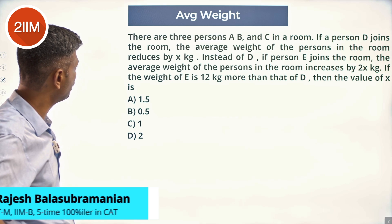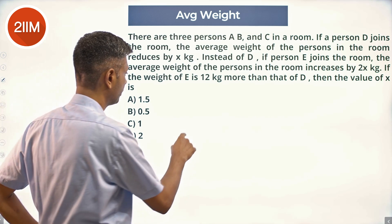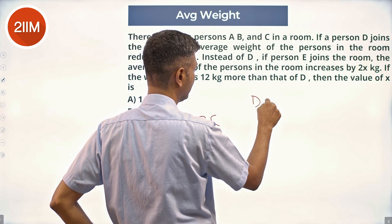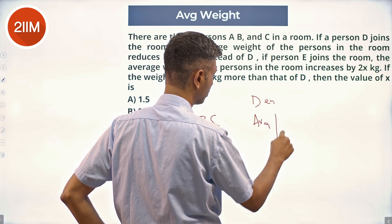There are 3 persons A, B, and C in a room. If person D joins the room, the average weight of the persons in the room reduces by x kilograms. When D enters, the average falls by x kilograms.